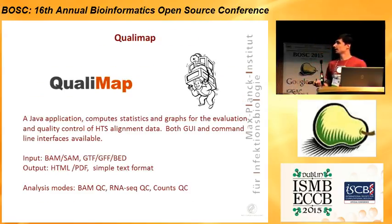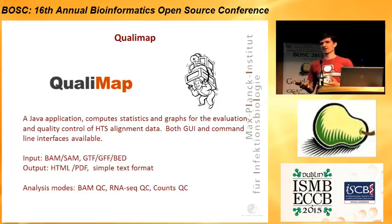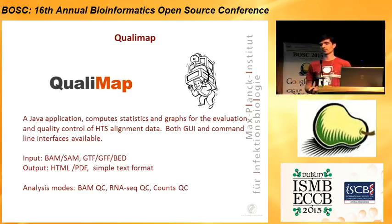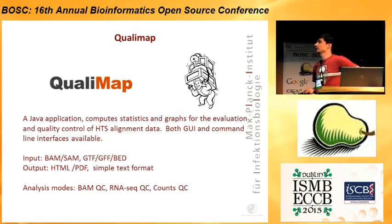Qualimap is a special application which allows us to analyze BAM files, alignment data, and to detect if there are any problems related to coverage analysis and many more. In input there is a BAM file, there is an annotation file, and the output is in HTML format or PDF format, and also simple text format that can be reused in further analysis. And there were three analysis modes: BAM-QC, RNA-QC, and CNV-QC.